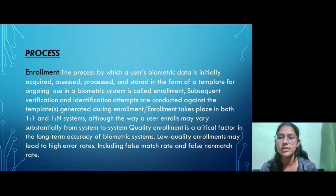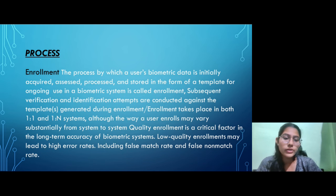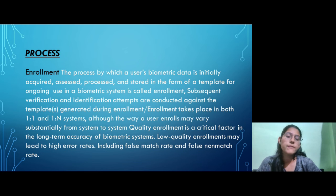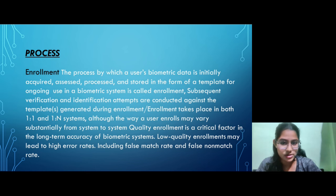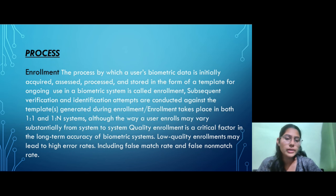The next topic is the process of a biometric system, which includes various steps. The first and most important step is the enrollment process. This is the process by which a user's biometric data is initially acquired, assessed, processed, and then stored in the form of a template for ongoing use. Subsequent verification and identification attempts are conducted against the template created during enrollment. Quality enrollment is a critical factor in long-term accuracy, as low quality enrollment may lead to a high error rate, including false match rate and false non-match rate.